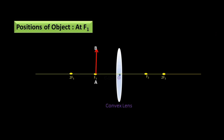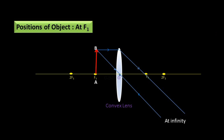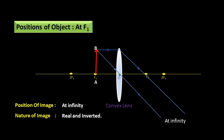Object at F1: AB is the object at F1. The incident ray parallel to the principal axis passes through focus F2. Another incident ray passes through the optical center without deviation. These two refracted rays are parallel to each other, so the image forms at infinity. Position: at infinity. Nature: real and inverted. Size: highly magnified.